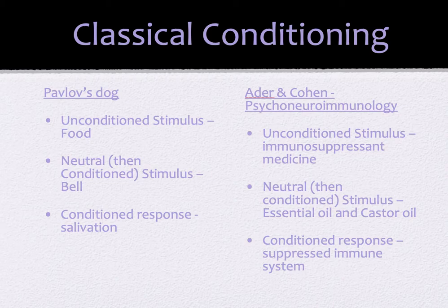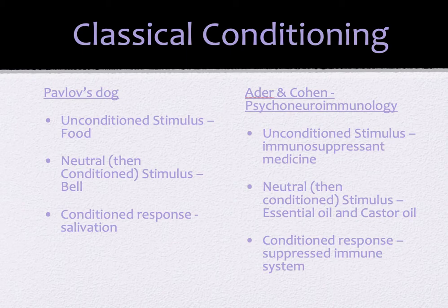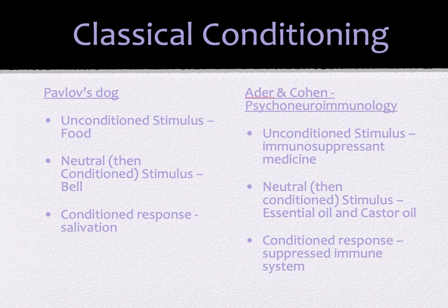They took an unconditioned stimulus — an immunosuppressant medicine. If you give somebody an immunosuppressant, it's going to reduce their immune system functioning without any additional conditioning. They then took two neutral stimuli: an essential oil that she would smell right when taking the immunosuppressant, and a spoonful of castor oil, which apparently tastes really bad. These two neutral stimuli were then conditioned so that all she had to do was smell the essential oil and take the castor oil, and it reduced her immune system functioning without taking the medicine.